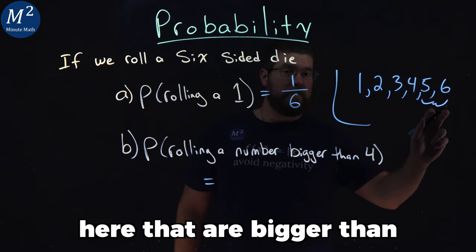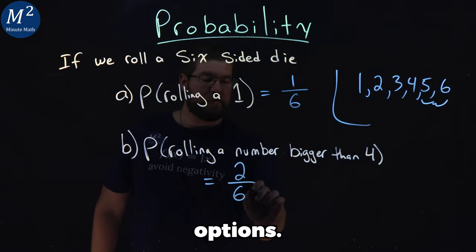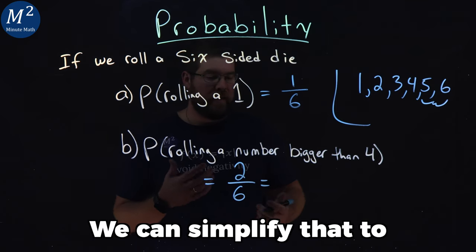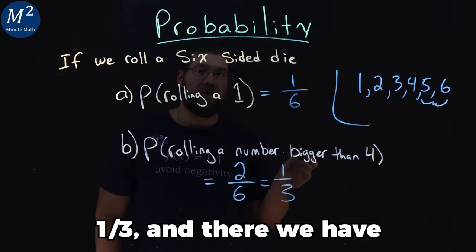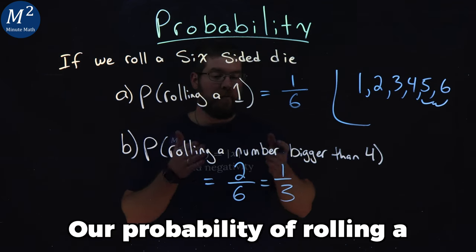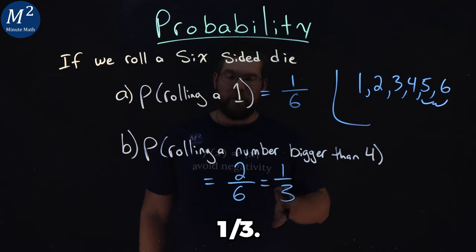So there are two numbers here that are bigger than four. So we have two out of a total of six options. We can simplify that. Two out of six is one-third. And there we have it. Our probability of rolling a number bigger than four is one over three.